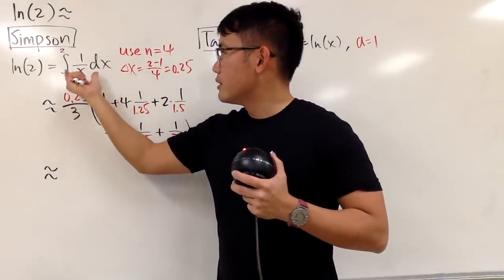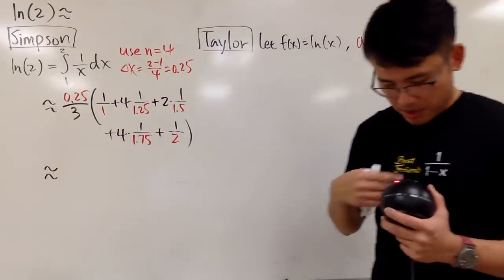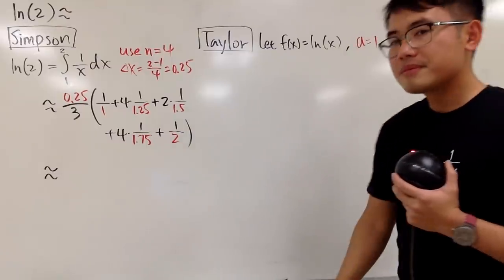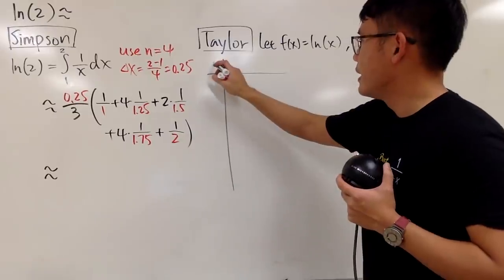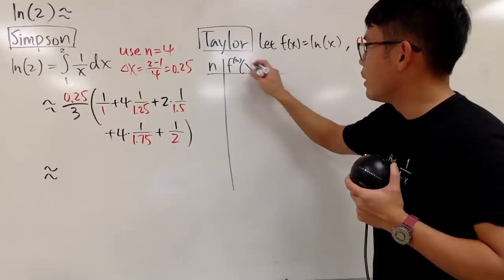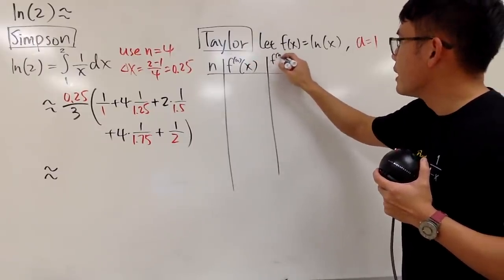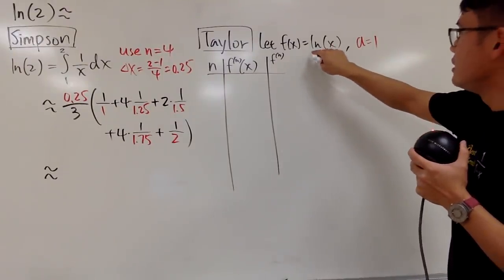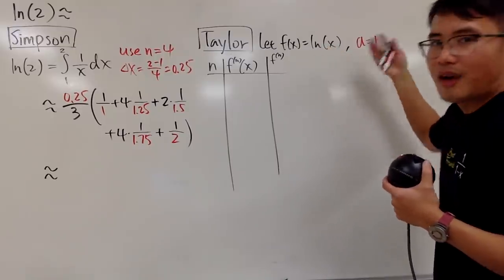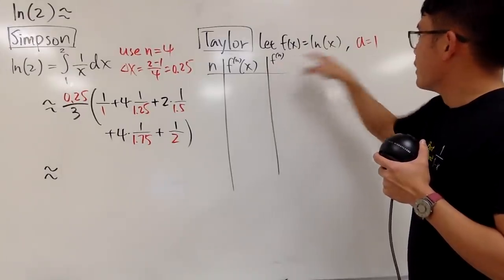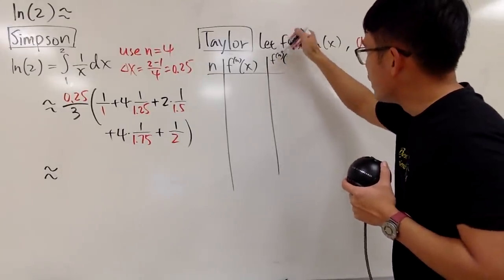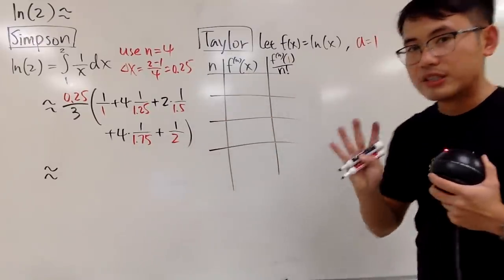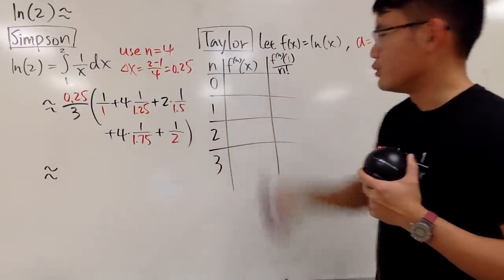Since Simpson's rule already used integration, I'm not going to integrate 1/(1+x) or anything like that — just the Taylor formula purely. So we'll draw a table with n values and the nth derivative of the function. We want the first four non-zero terms, so n goes up to 4, matching the n=4 we used in Simpson's rule. Because a=1, we'll evaluate the nth derivative at 1 and divide by n factorial.